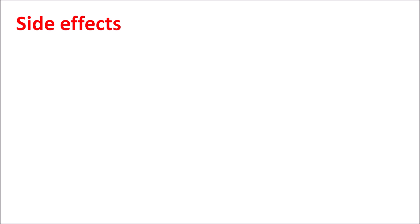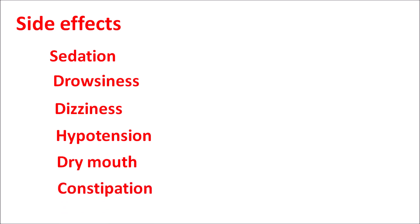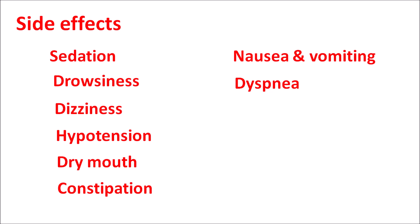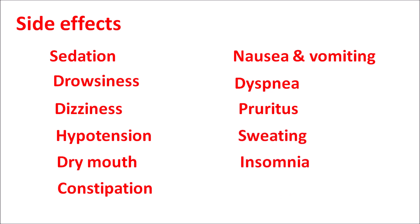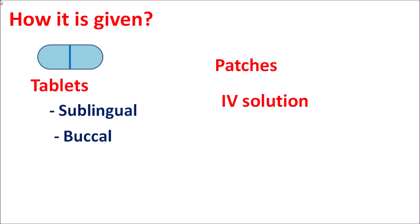The important side effects of fentanyl include CNS depression symptoms such as sedation, drowsiness, and dizziness. It can produce vasodilation causing hypotension, dry mouth, and constipation due to decreased GI motility. It stimulates the chemoreceptor trigger zone (CTZ), causing nausea and vomiting. It causes respiratory depression resulting in dyspnea, and increases histamine release causing pruritus. Other side effects include sweating, insomnia, and confusion. Fentanyl is available as tablets given sublingually or buccally to avoid first-pass metabolism, as well as transdermal patches, IV solution, and lozenges.